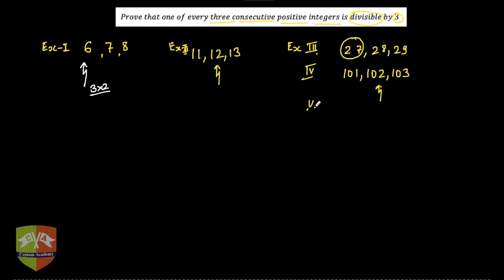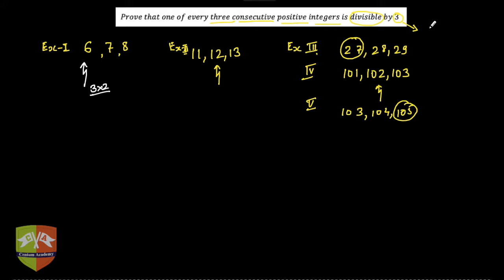There could be an infinite number of such examples. Take one hundred three, one hundred four, one hundred five — again, one hundred three is divisible by three. Every set of three consecutive positive integers has one that is a multiple of three. Now, the key observation: any positive integer can be expressed in the form 3k, 3k plus 1, or 3k plus 2.